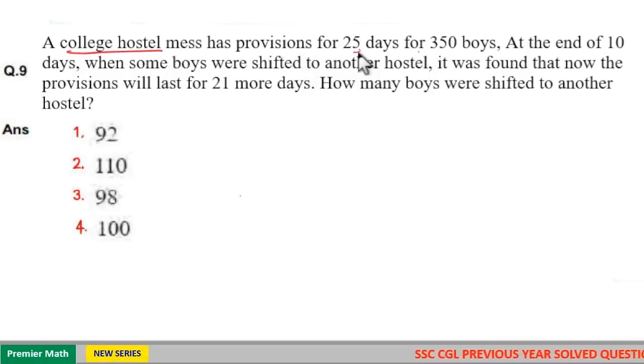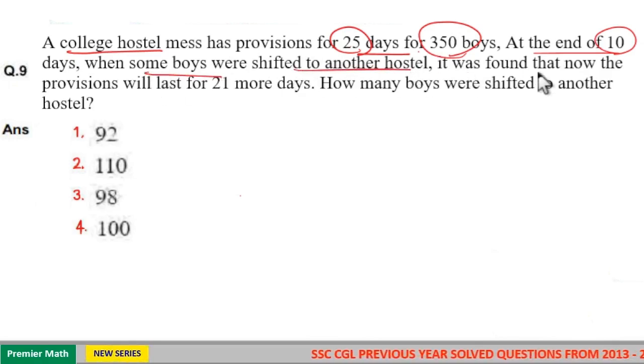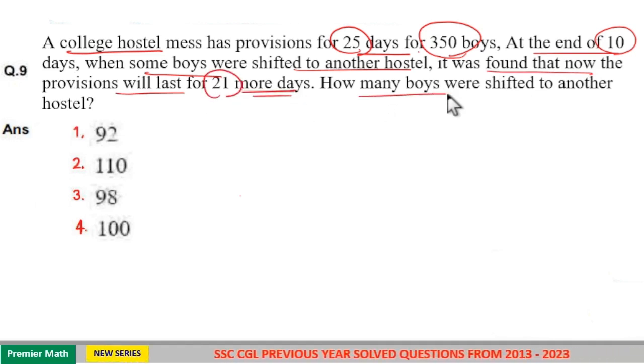A college hostel mess has provisioned for 25 days for 350 boys. At the end of 10 days, when some boys were shifted to another hostel, it was found that now the provision will last for 21 more days. How many boys were shifted to another hostel?